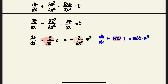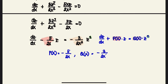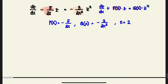So our P(x) = −5/(2x), Q(x) = −3/(2x²), and n = 2. Now that we have these, we can determine our integrating factor.